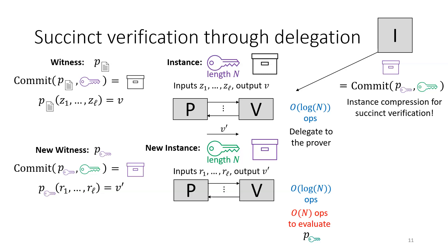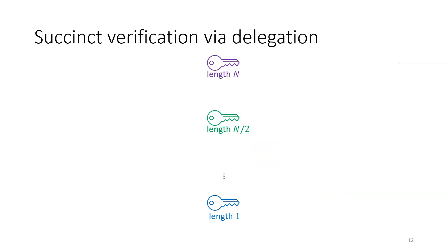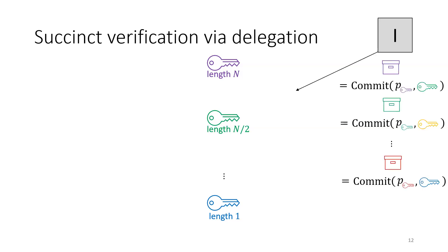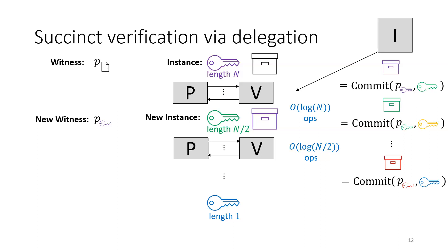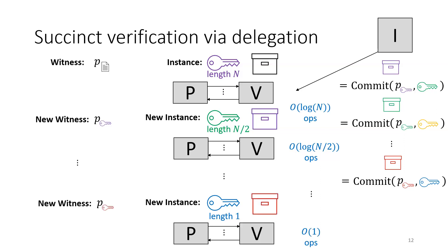But this just commits to the old key under a new one of the same length, pushing the problem onto a polynomial evaluation using the new key. What we'd really like to do is change this length-N key for a shorter one, making a slight improvement. After that, we can just recurse. Unfolding everything, the final protocol starts with keys of length N, N/2, going all the way down to 1, committed in a preprocessing phase. When you add up all the costs, the verifier becomes a log²(N) operation verifier.